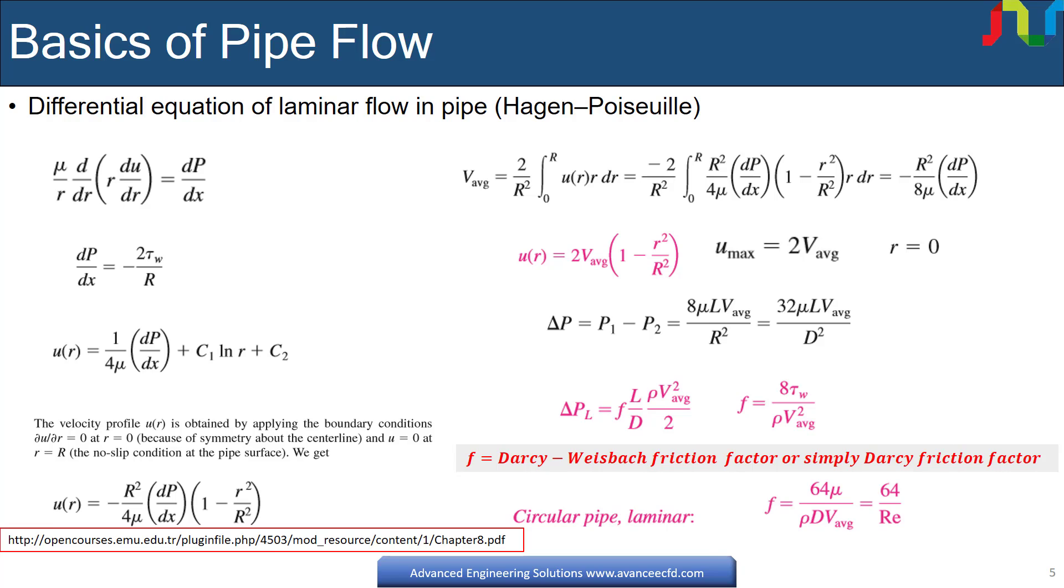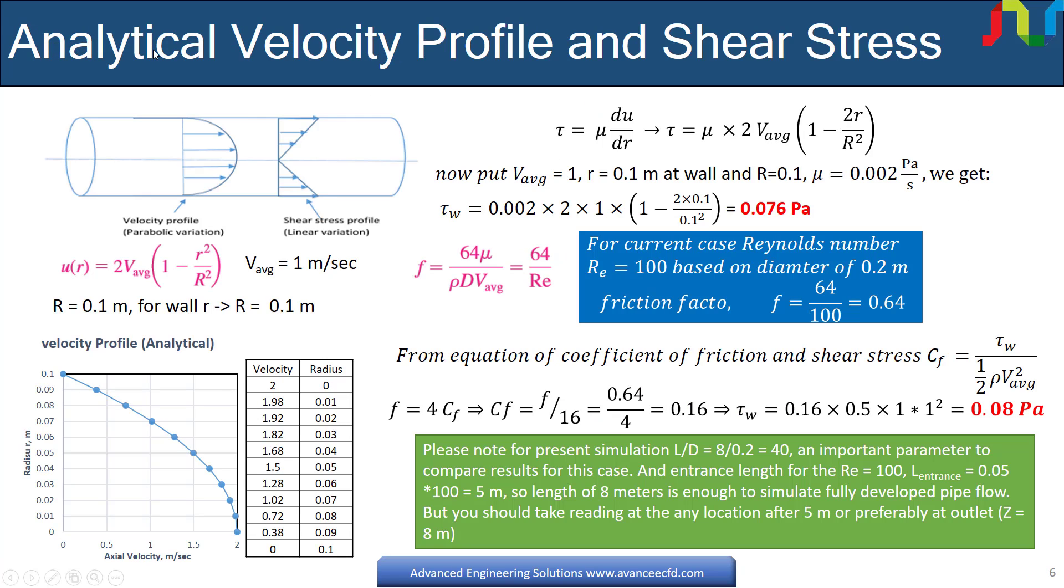Here we shall discuss the analytical velocity profile and shear stress in laminar pipe flow. Velocity profile is of parabolic shape. It has maximum velocity at center line and is zero at wall. Shear stress is zero at center line where slope of velocity is zero and is maximum at wall.